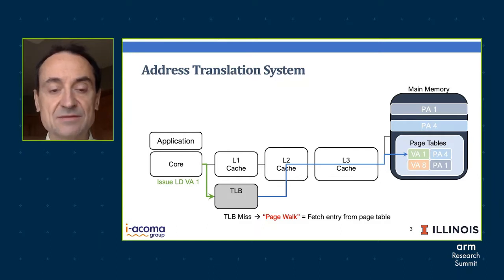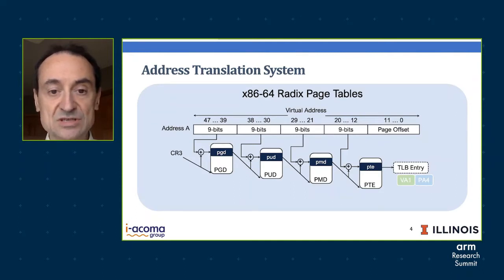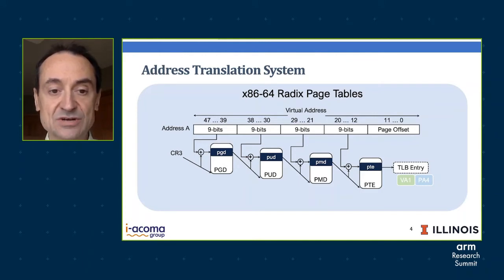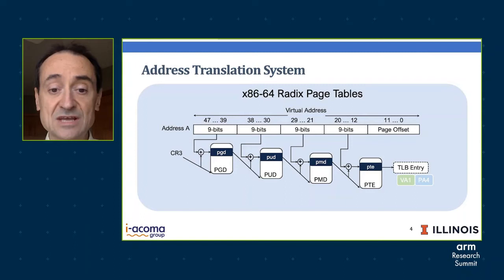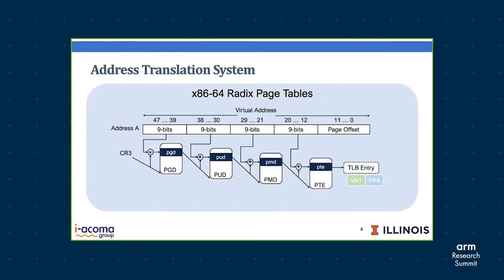Today, address translation systems are very complicated. This is what we see in x86 radix page tables. Instead of having a single step of translation, the page tables are organized in a hierarchy with multiple levels of translation. Initially, we use a special register, CR3, to get the base of the first level of page tables. We add the base to the most significant nine bits of the virtual address. That gives us an entry in the first level page table, the PGD. We read this entry, and then dereference that location because it has a pointer to the base of the second level of pages. We add to that base the next nine bits of the virtual address, get the PUD entry, and that's the base of the next level and so on. Only after four levels do we get the actual virtual-to-physical translation, which is what we put in the TLB.